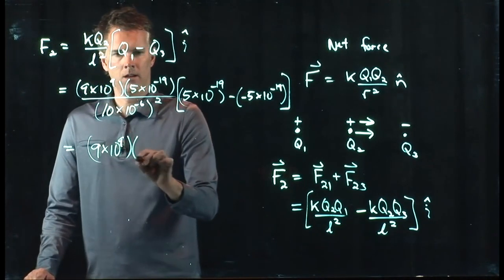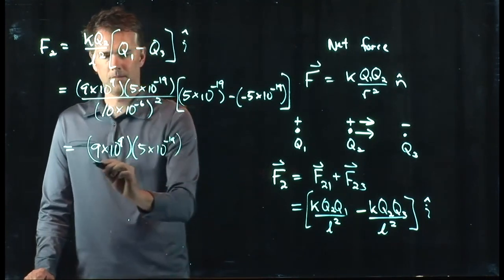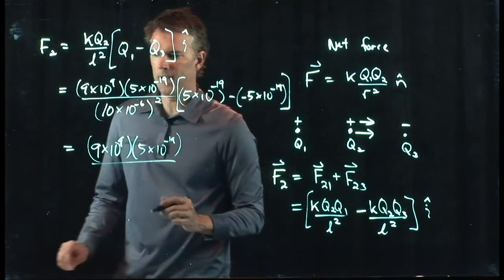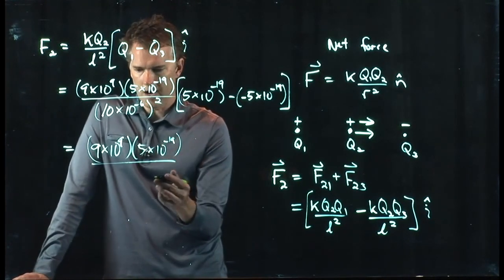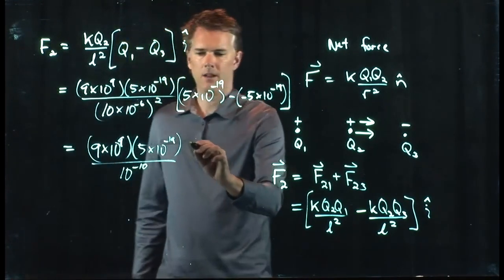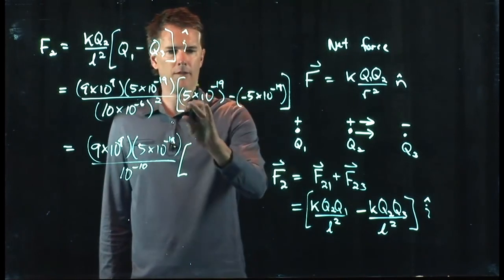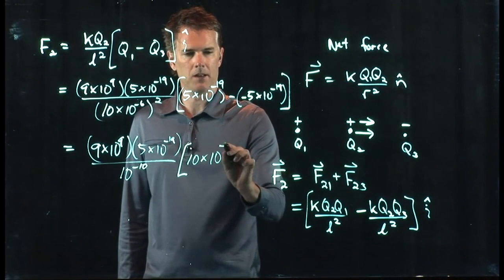So what do we get? We get 9 times 10 to the 9, 5 times 10 to the minus 19, we have a 10 times 10 to the minus 6, which is a 10 to the minus 5. If I square that, I get a 10 to the minus 10 down there, and over here I have a 5 plus a 5, so I have 10 times 10 to the minus 19.